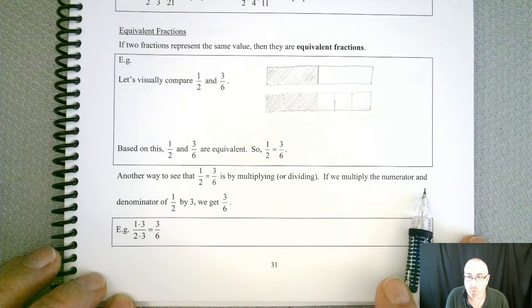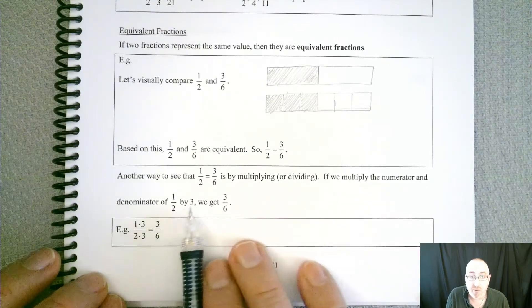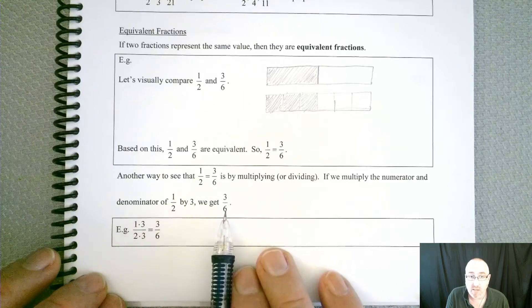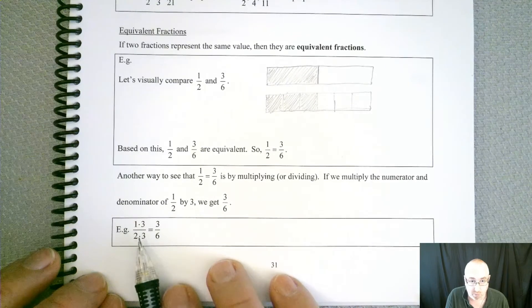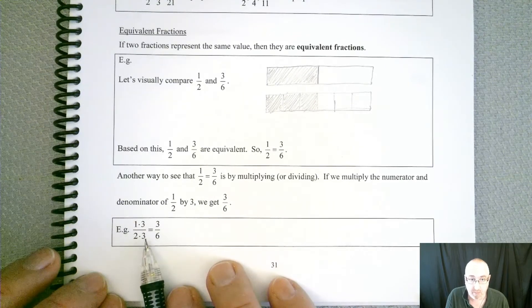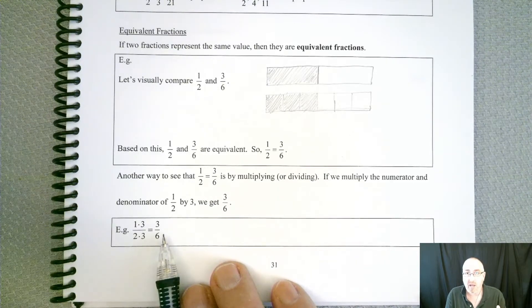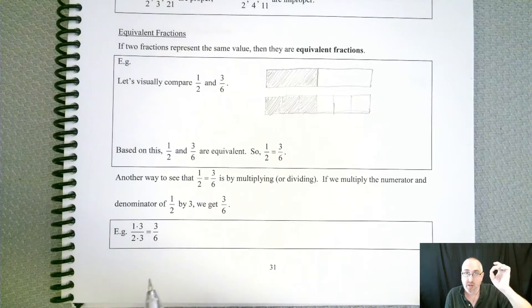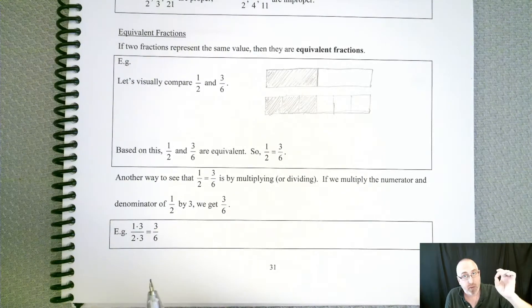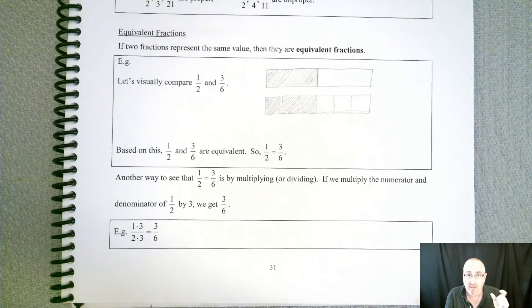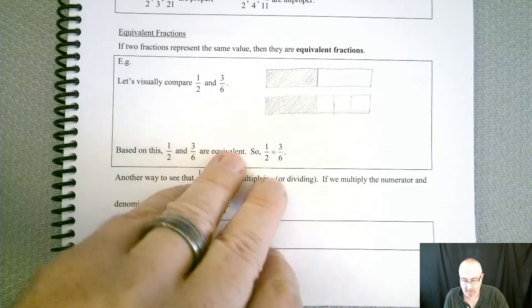But we don't want to draw pictures for every one of these problems. So how can we do that differently? If we multiply the numerator and denominator of 1/2 by 3, we get 3/6. We just multiply the top by 3 and the bottom by 3. That's going to be the key. As long as we do the same thing to the top and bottom, either multiplying or dividing, then we should get the same fraction.